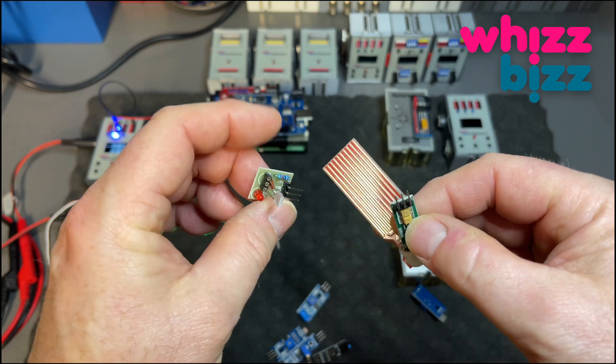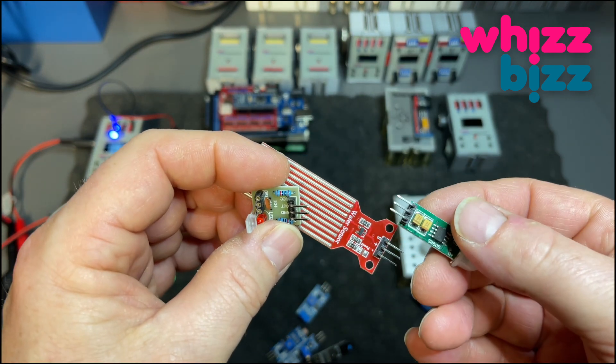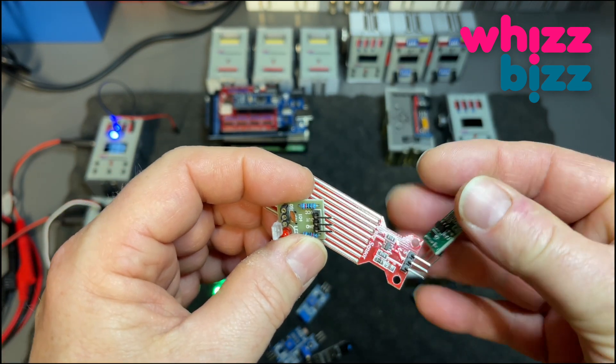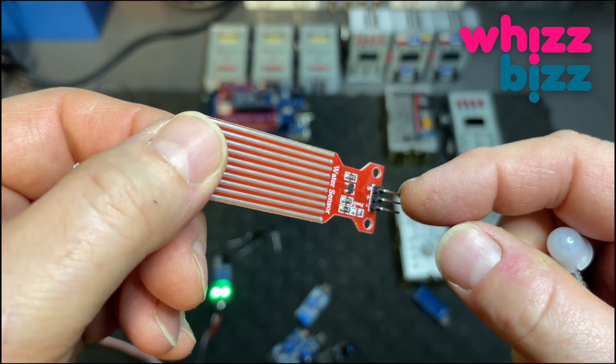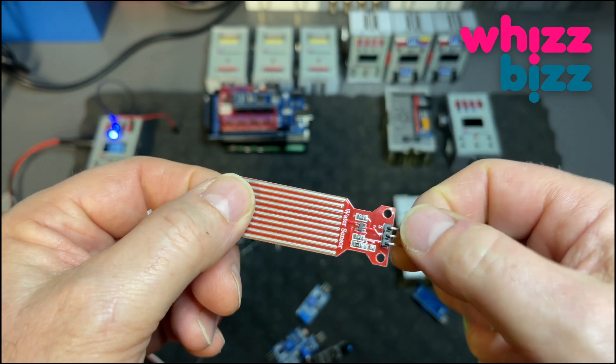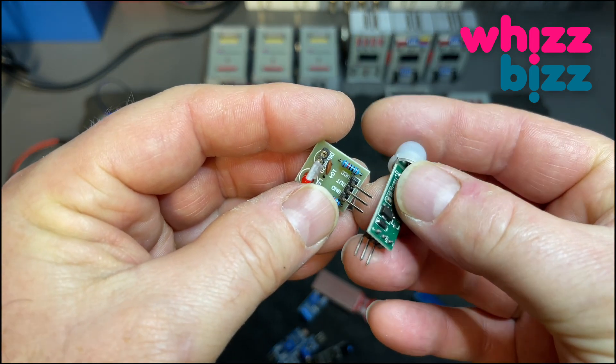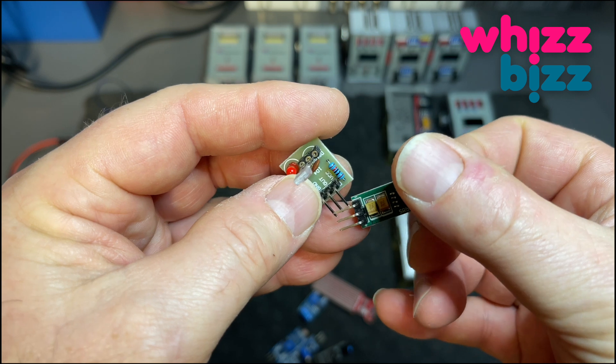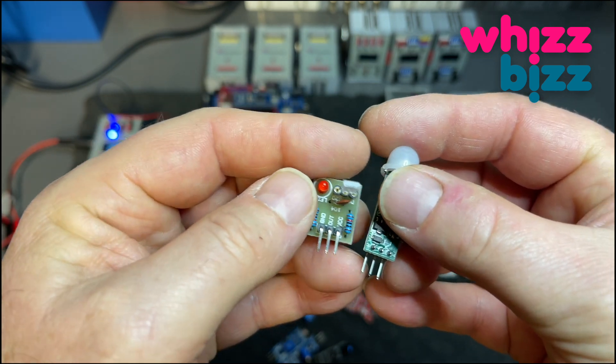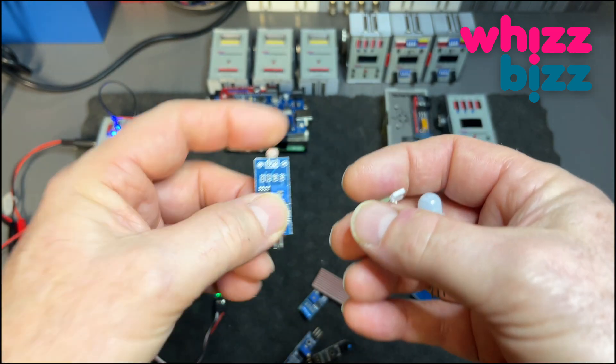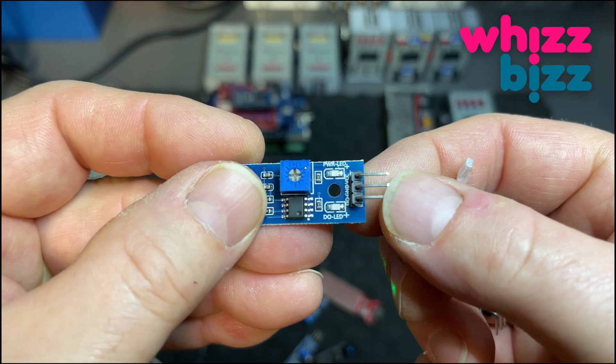Why? Well, because the pinout differences between those modules are quite large. For instance, the signal output of this module is on the side and with this one it's in the middle. Also the order of the plus and minus connection is really quite random. With three pins, there are around six possible sequences and I've seen them all.